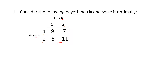That is, for player A strategy 1: A1 and B1, outcome is 9; A1 and B2, outcome is 7; A2 and B1, it is 5; and A2 and B2, it is 11. These are the outcomes.